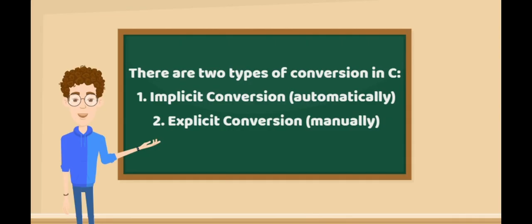To get the right result, you need to know how type conversion works. There are two types of conversion in C: implicit conversion, automatically, and explicit conversion, manually.